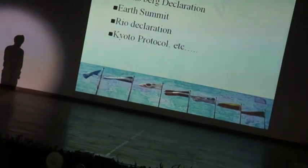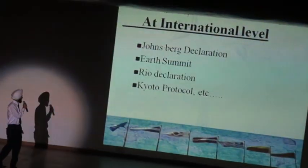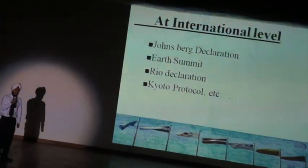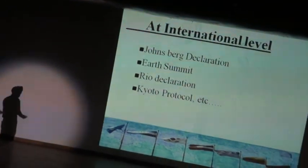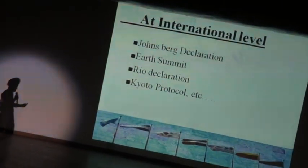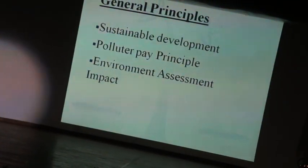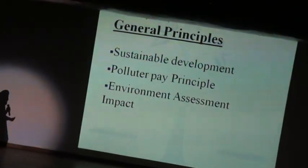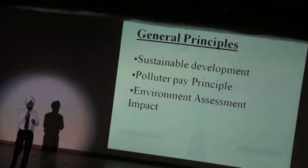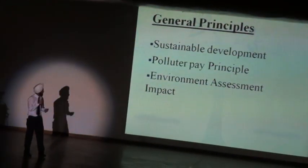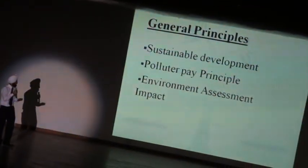Certain steps have been taken at the international level, like the Johannesburg Declaration, Earth Summit, Rio Declaration, and the Kyoto Protocol. Certain principles have been followed, like sustainable development — development should take place without affecting future generations — the Polluter Pays Principle, and environmental impact assessment.